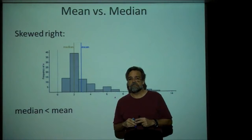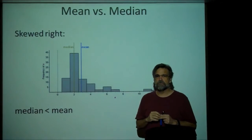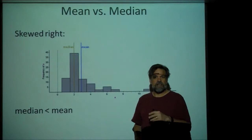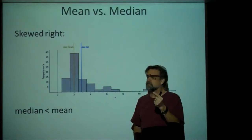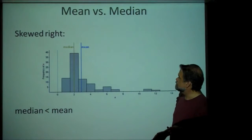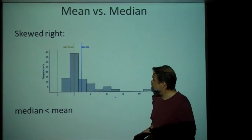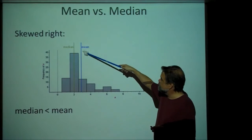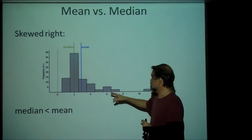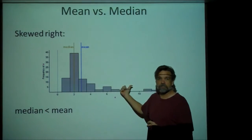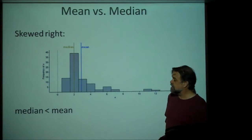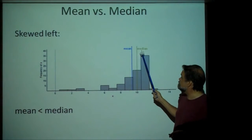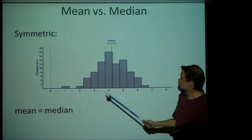Now, we've looked at two different ways of describing the center of a set of data: the median and the mean. Usually they're kind of close together, but it's important to notice when one is bigger than the other. Here we have a distribution that is skewed right — there's a tail going off to the right. The mean goes in the direction of the tail, so when something is skewed right, the mean is always bigger than the median. When it's skewed left, the median is bigger than the mean. And if it's symmetric, they're exactly the same value.